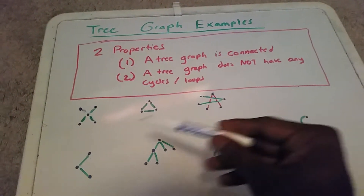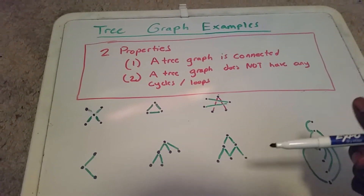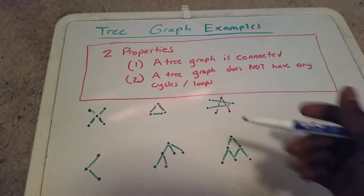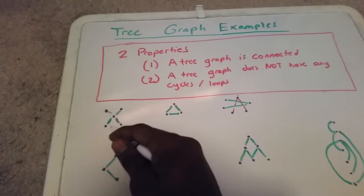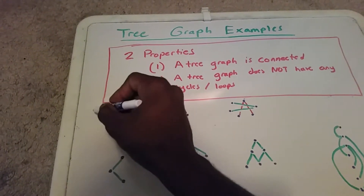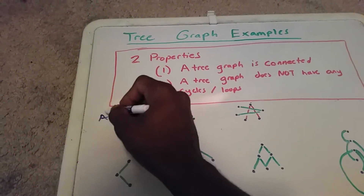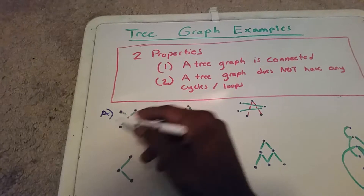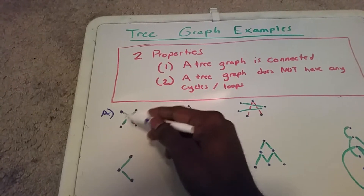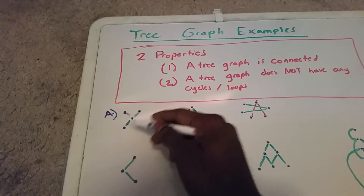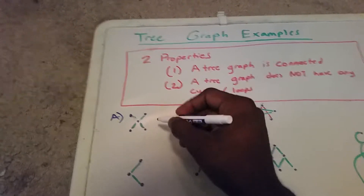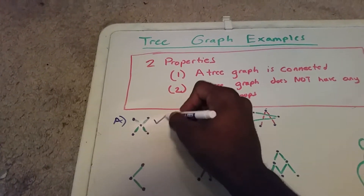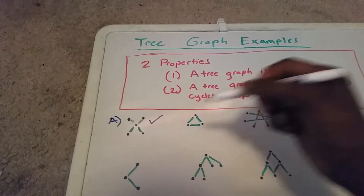Here I have a couple of examples and non-examples of a tree graph. First, we have a graph here — I call it A. We can see that it is connected, and we can see that there are no cycles, so it's a tree graph.